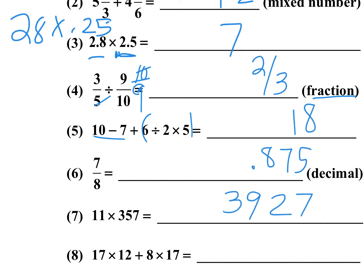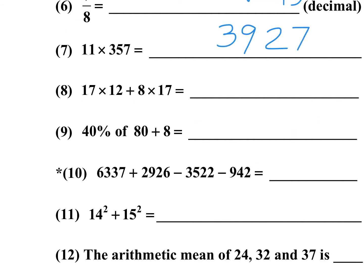Number 7's answer is 3927. Number 8: 17 times 12 plus 8 times 17. Since we have a common factor of 17, factor it out and you're left with 12 plus 8, which is 20. What's 20 times 17? That's 340.